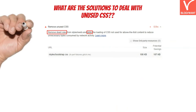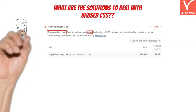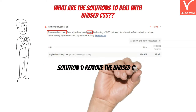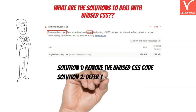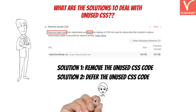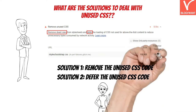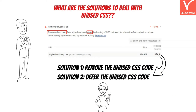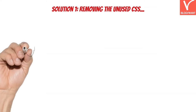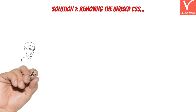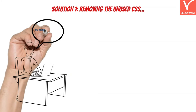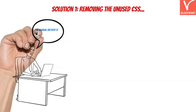Let's see the solutions suggested by the Google PageSpeed tool itself. There can be two solutions: either remove the unused CSS code or defer it — we will cover both. Let's start with solution one, which is removing unused CSS. Removing CSS manually without a plugin is not as easy as you might think, and the success ratio is less compared to the defer method.